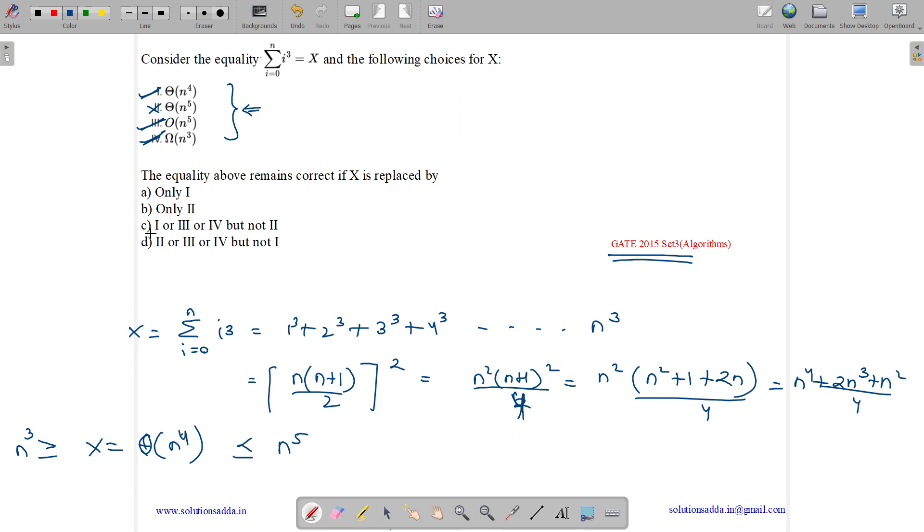So correct answer is 1, 3, and 4. 1 or 3 or 4, but not 2. So option C is the correct answer for this question.